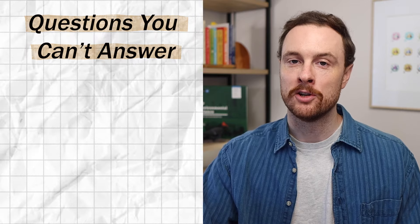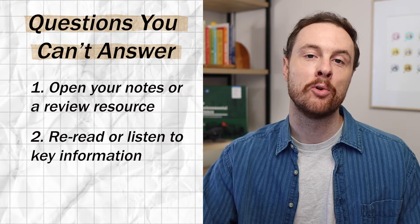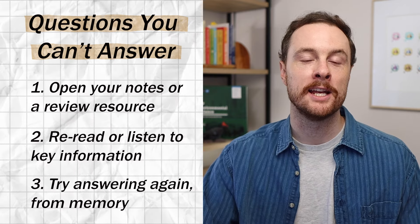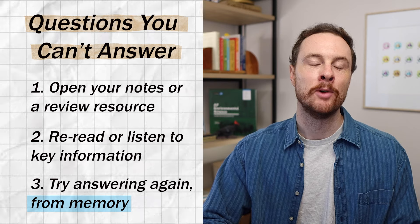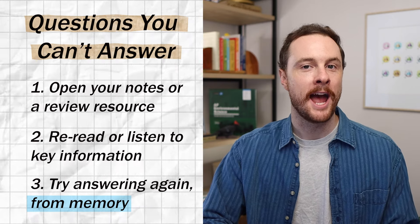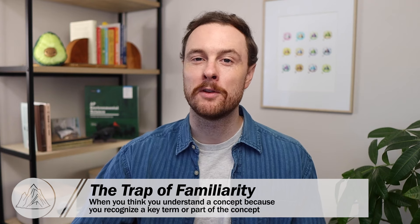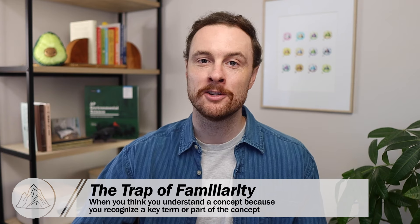There are definitely going to be questions you either can't answer at all or answer incorrectly, and it's what you do at those specific questions that's going to separate you from 90% of students who are just going through the motions. When you get to a question you can't answer, go back to your notes, the review video, or your textbook, review the important information needed to answer that question, then close that review resource and try answering the question from memory. Also, use the answer key to correct your study guide answers — this helps you avoid the trap of familiarity, where you recognize a term or think you have the gist of an idea but actually have serious gaps or misconceptions in your understanding.